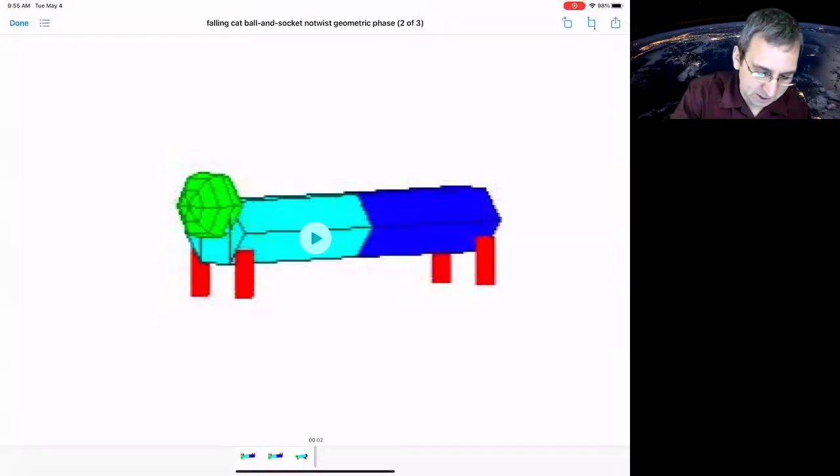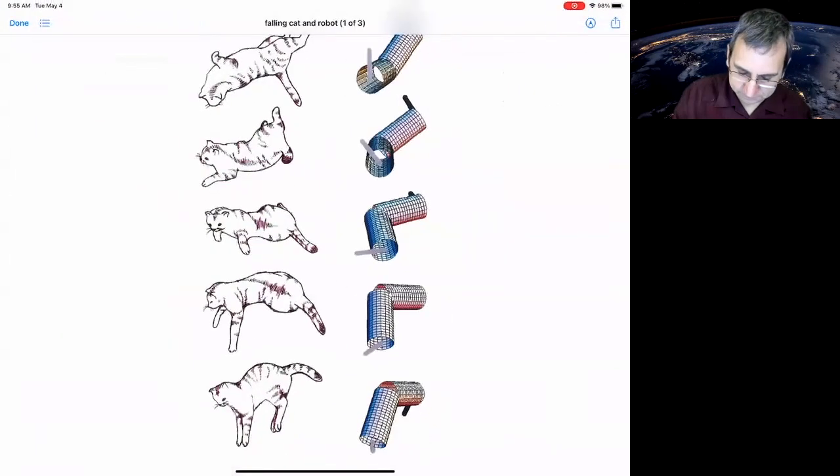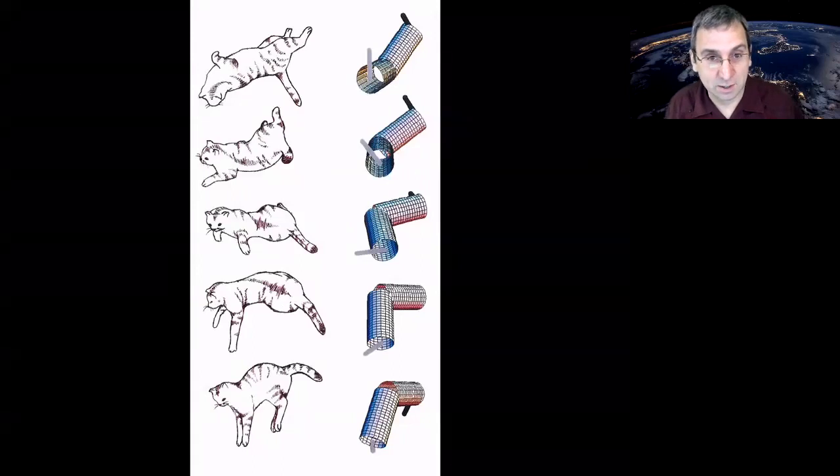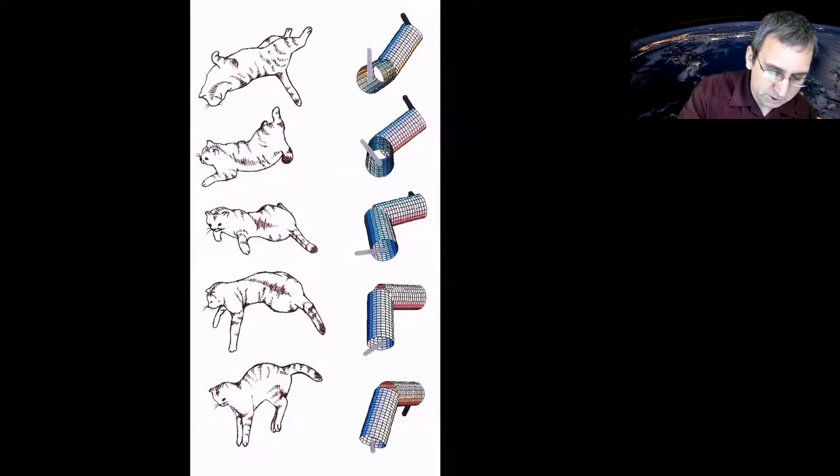And you can do the same thing with spacecraft. Here's a creepy side-by-side of a falling cat, an approximation by two masses connected by a ball and socket joint. So you can start with zero angular momentum and achieve rotation.